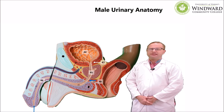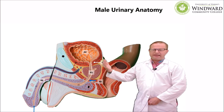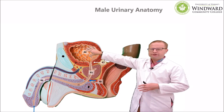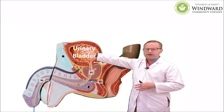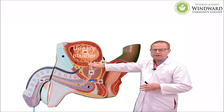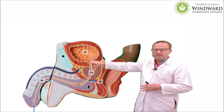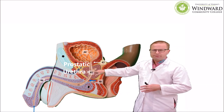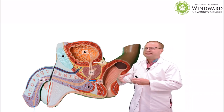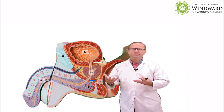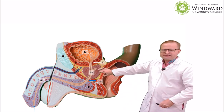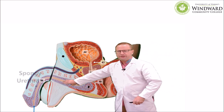Now let's look at sex differences in urinary anatomy. What we have here is a sagittal section of the male urinary tract including the urinary bladder and the urethra. The urinary bladder drains into the neck of the bladder and then we have the urethra. In males the urethra is divided into two or three parts. The first major part is something called the prostatic urethra, which travels through the prostate gland. As men get older the prostate gland enlarges and impinges upon the urethral diameter, making it difficult to urinate.